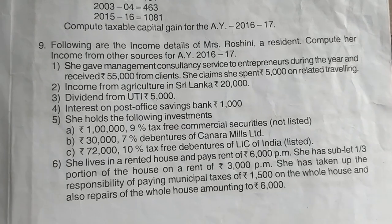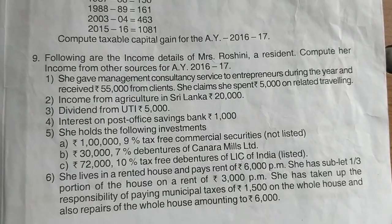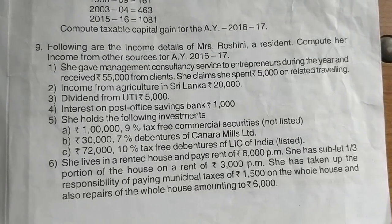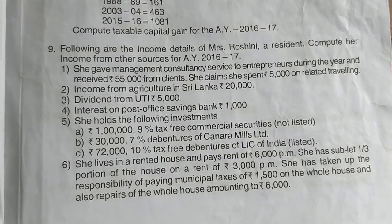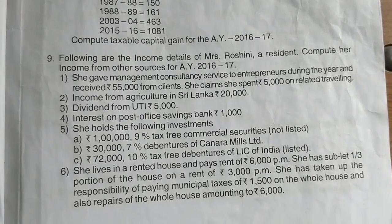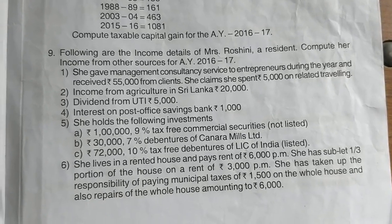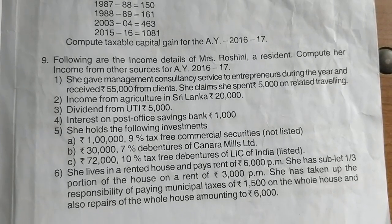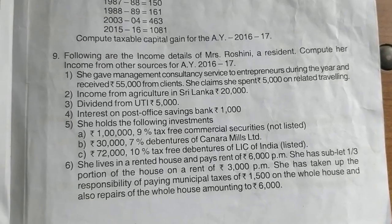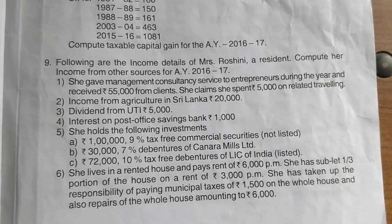She gave management consultancy services to entrepreneurs during the year and received 55,000 rupees from clients. She claims she spent 5,000 rupees on related traveling. Income from agriculture in Sri Lanka is given. Dividend from UTI is 5,000. Interest on post office savings bank is 1,000. She holds 100 units of 9% tax-free commercial securities (not listed). 30,000 of 7% debentures of Canara Mills Limited.